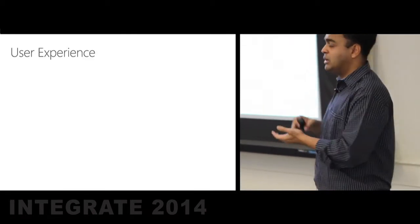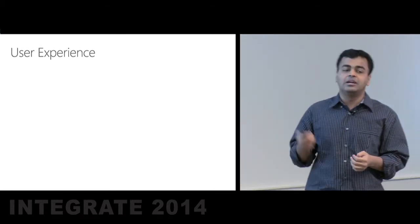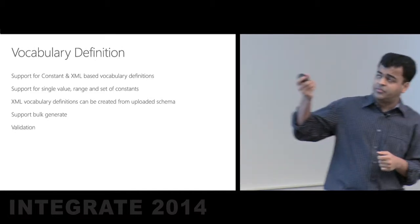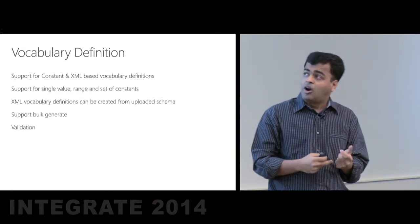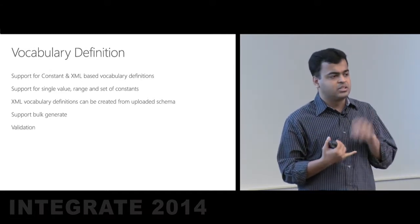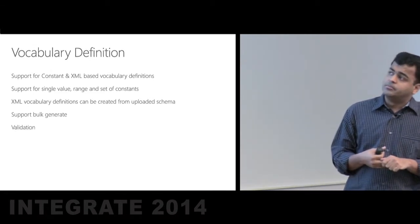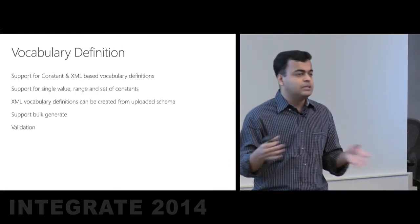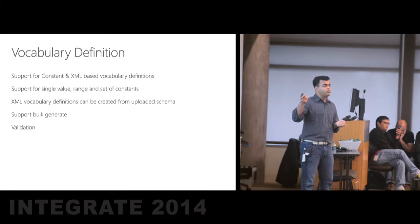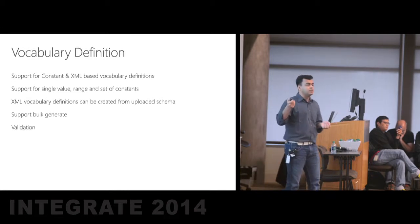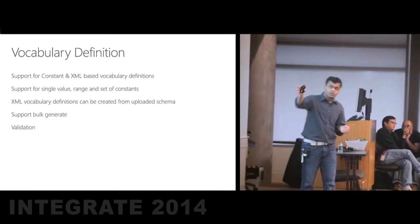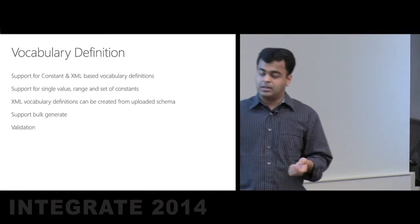Let's start with vocabularies. We will, off the bat, support constant and XML-based vocabulary. Within the constant vocab, we support either a single value, a range of values, or a set of values. The XML vocabulary definitions can be created from any of the XML schemas uploaded to the rules microservice. We will support bulk generate — a very important scenario where you have a single schema and want to generate multiple vocabularies from it, without having to create each one individually. Validation will work right off the bat and up front.